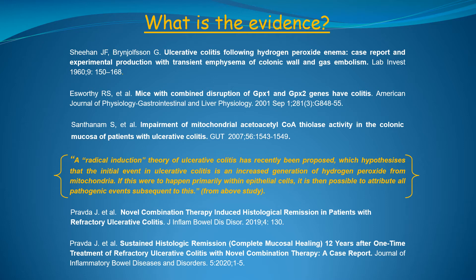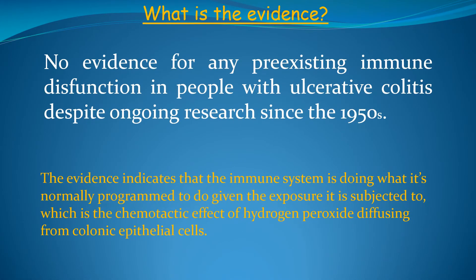These data provide compelling evidence that colonic epithelial hydrogen peroxide is the etiological agent responsible for human ulcerative colitis, and treatment with a reducing agent aimed at eliminating excess colonic hydrogen peroxide can induce complete histological remission and mediate biological alterations in colonic epithelial cells that can abrogate the tendency for relapse. By all measures, this represents a cure for this disease. Finally, it's appropriate to mention that despite consensus opinions by leading researchers to the contrary, ongoing research since the 1950s has failed to uncover any evidence for a pre-existing immune dysfunction as the cause of ulcerative colitis.